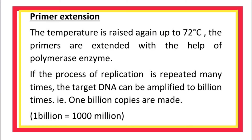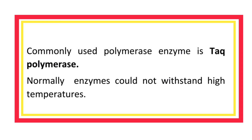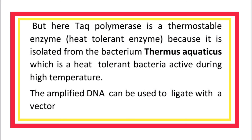One billion is equal to thousand million. The commonly used polymerase enzyme is Taq polymerase. Normally, enzymes could not withstand high temperatures, but Taq polymerase is a thermostable — that is, heat-tolerant — enzyme, because it is isolated from the bacterium Thermus aquaticus, which is a heat-tolerant bacterium active at high temperatures.